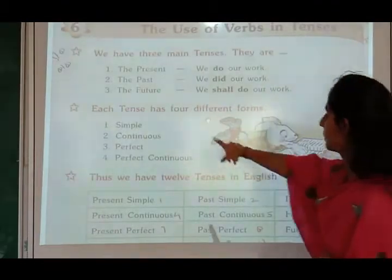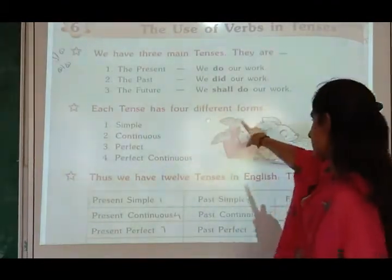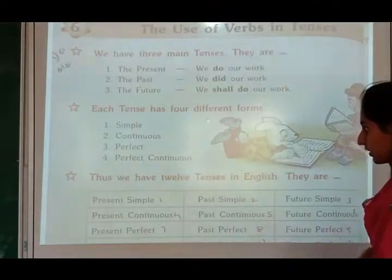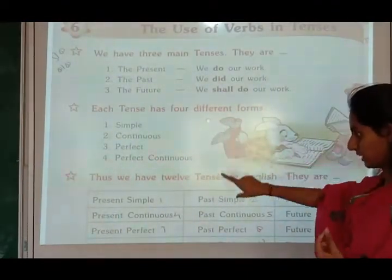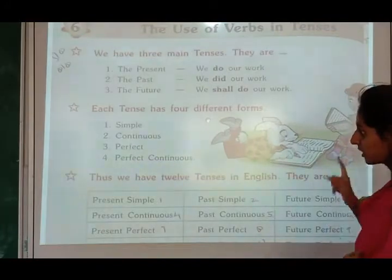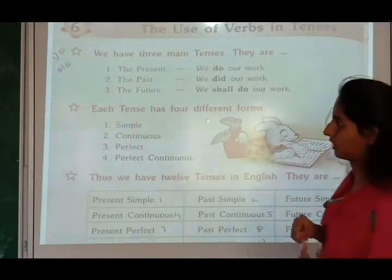Now, each tense has four different forms: that is simple, continuous, perfect, and perfect continuous.